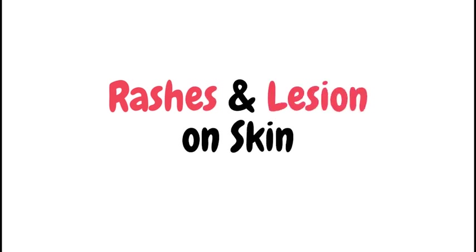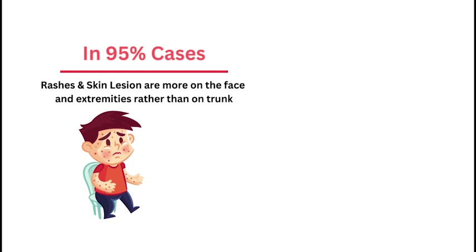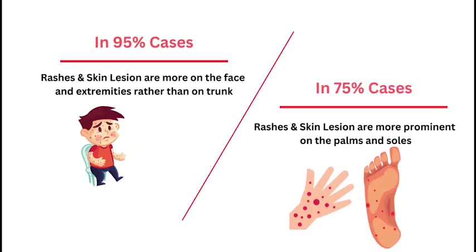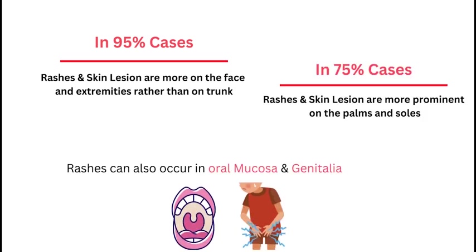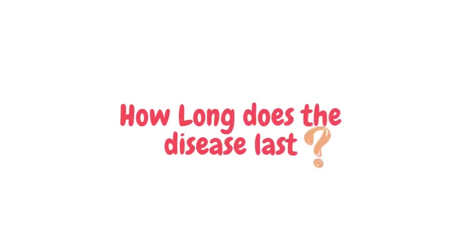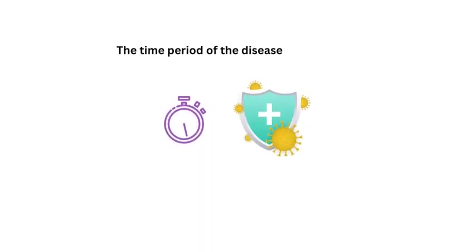Other symptoms of monkeypox virus include lack of energy, body aches, and skin rashes appearing after one to three days of fever. In 95% of cases, rashes and skin lesions are more concentrated on the face and extremities rather than on the trunk. In 75% of cases, rashes and lesions are more prominent on the palms of the hands and soles of the feet. Skin lesions can also occur in the oral mucosa and genitalia.